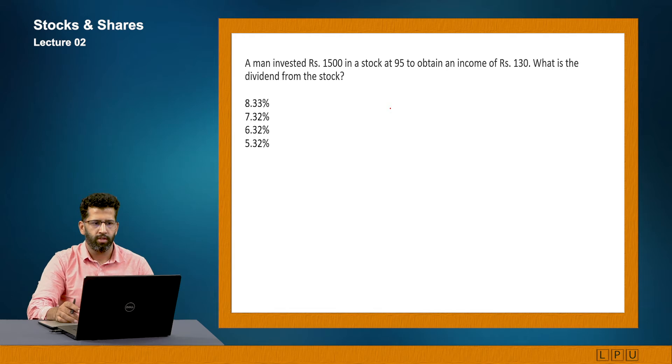Now let's look at this question: a man invested rupees 1500 in a stock at 95 to obtain an income of 130. What is the dividend from the stock? Now understand, they may confuse you with different kinds of data, but you have to keep in mind what you need to solve this question. I want to find at what percent he will earn, what percent of income he will earn.